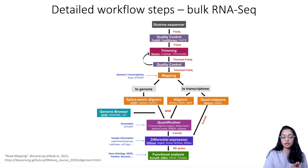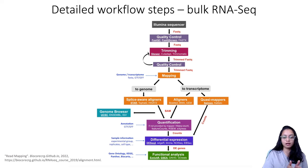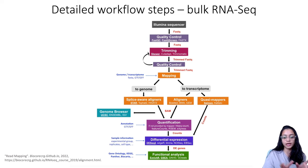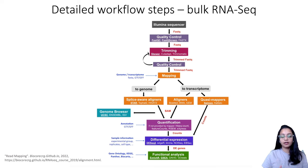RNAseq reads are derived from mature mRNA, which contains only exon sequences — no introns. If you try to align these RNA sequences to the reference using a non-splice-aware aligner, it would try to map reads to regions containing introns, and the reads won't align. A splice-aware aligner knows not to align RNAseq reads to introns, but instead identifies downstream exons and aligns reads only to exons, ignoring introns.